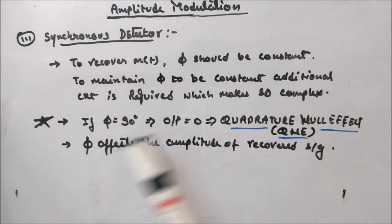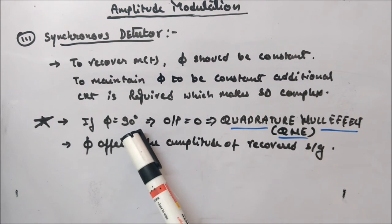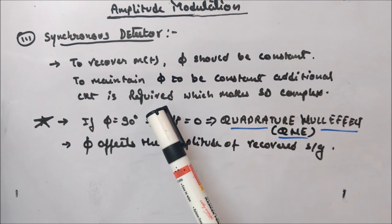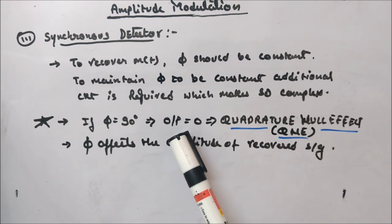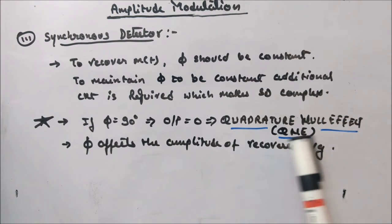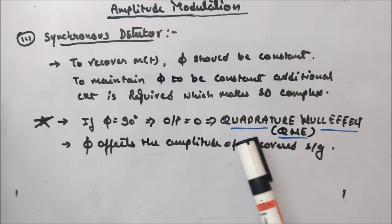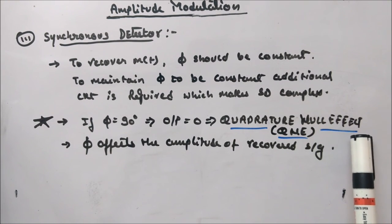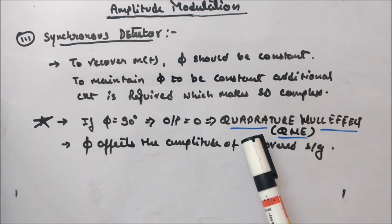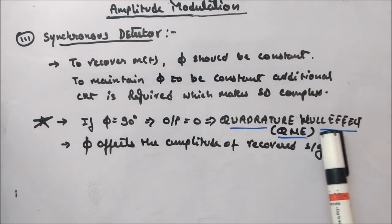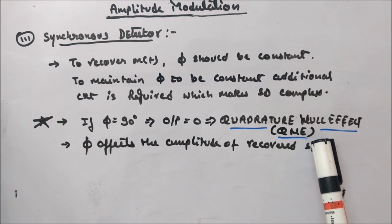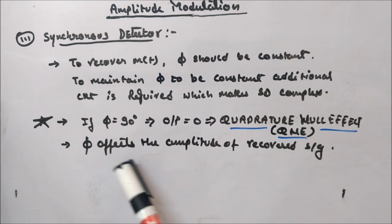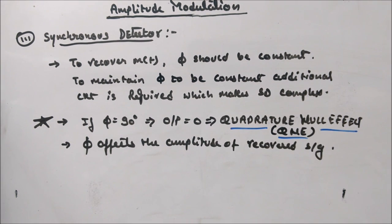There is one more important point: if φ equals 90°, then cos(φ) equals 0, and in that case the output will be 0. This means the detector suffers from the quadrature null effect (QNE). So φ directly affects the amplitude of the recovered signal.